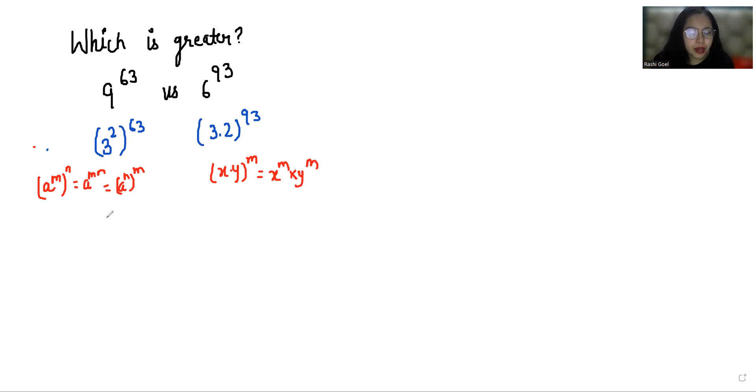So it becomes 3 power 2 times 63, which is 126, and this becomes 3 power 93 times 2 power 93.